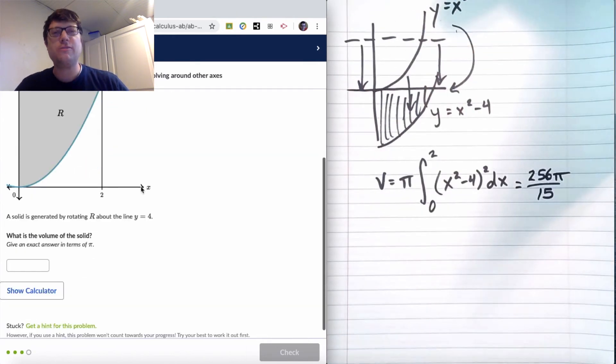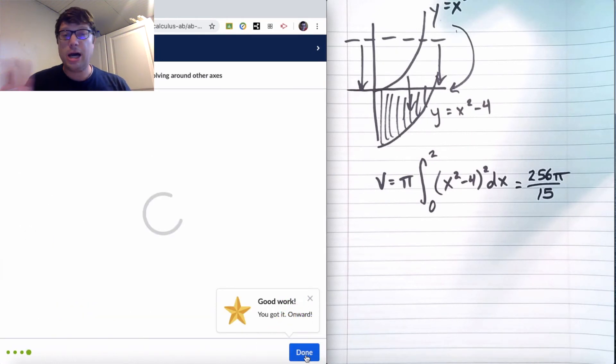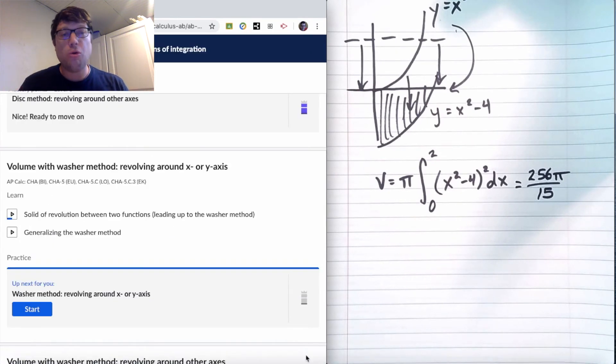And the answer is 256 pi over 15. Once again, pause the video. Full disclosure, I'm not really doing anything fancy. I am going to Wolfram Alpha slash Desmos slash calculator slash other resources in those math magic moments. But I'll leave that to you to decide.